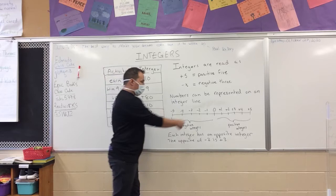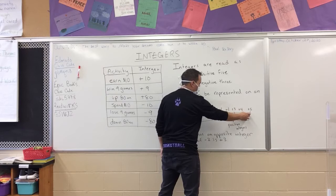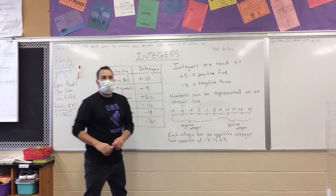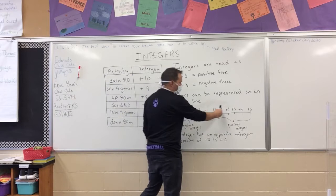Numbers can be represented on an integer line — you see this all the time. You've got zero in the middle. Positive one, positive two, positive three, positive four, positive five — these are what we call positive integers. Negative one, negative two, negative three, negative four, negative five — these are what we call negative integers. Numbers don't stop at zero.